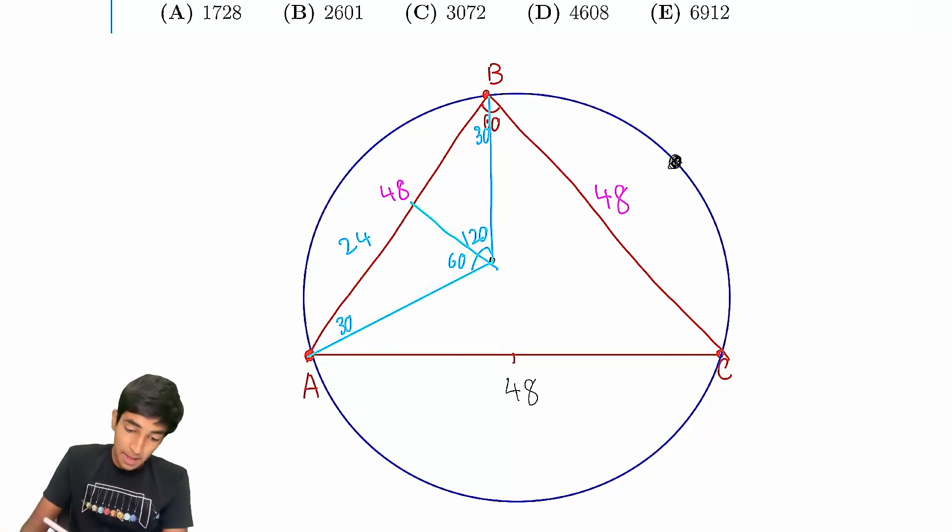And therefore, the diameter is just going to be 32 root 3. So the square of the diameter, which is the maximum distance, is this. Which is 1024 times 3, 3072. And that's the answer.